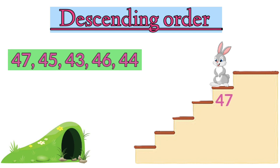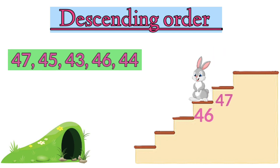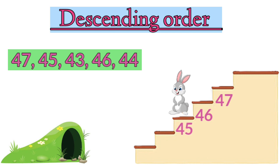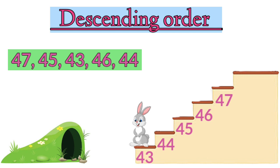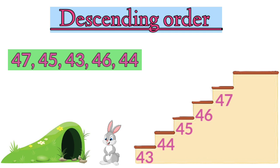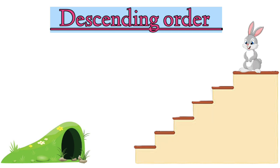Next number will be 46, then comes 45, followed by 44, and finally the smallest number, that is 43. Therefore Mr. Bunny finally gets down to go back to his home. Children, let's do one more example by arranging the numbers in descending order and help Mr. Bunny to get back to his home.